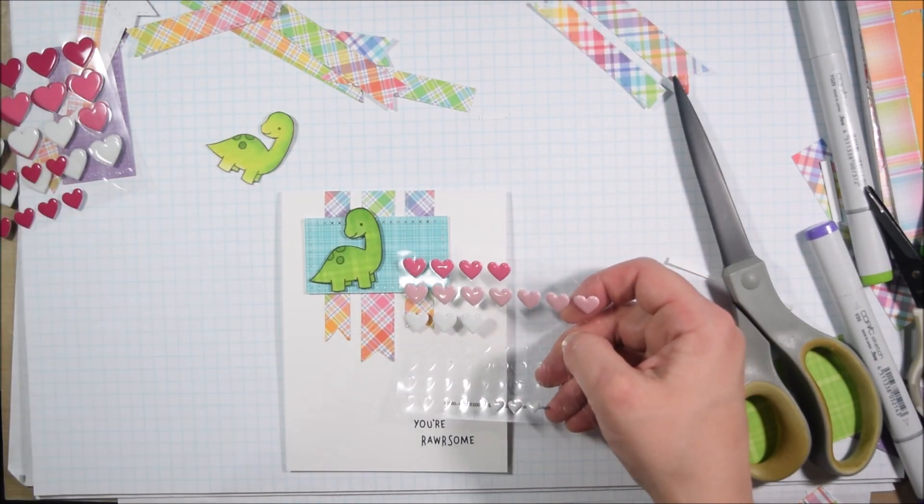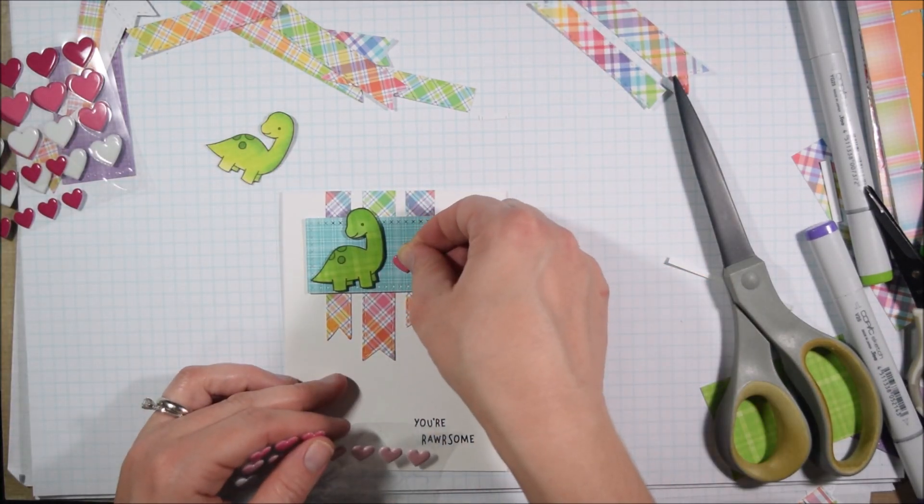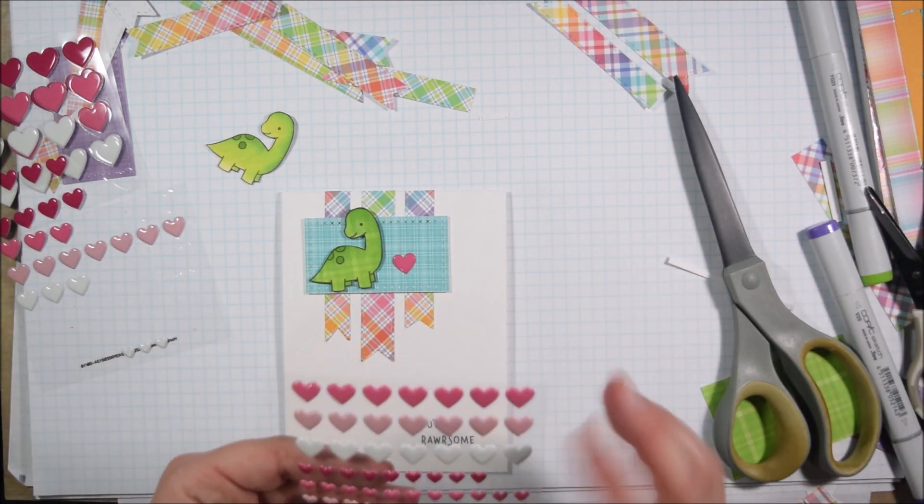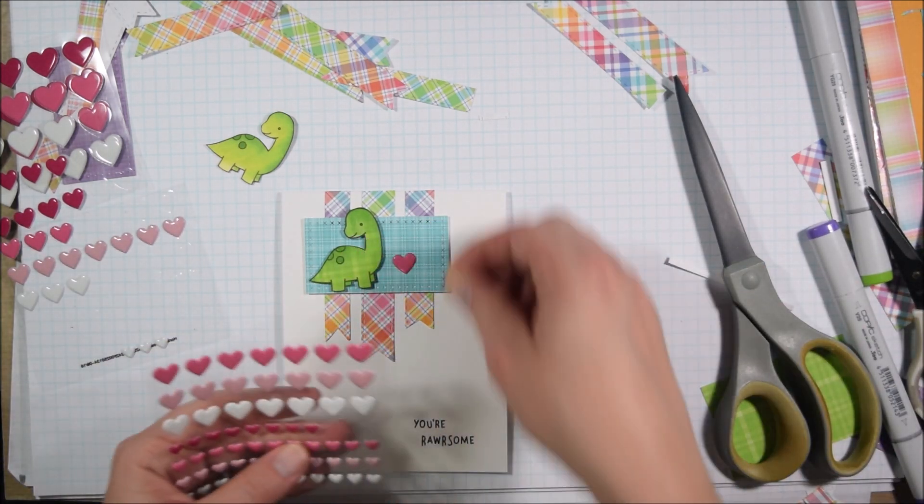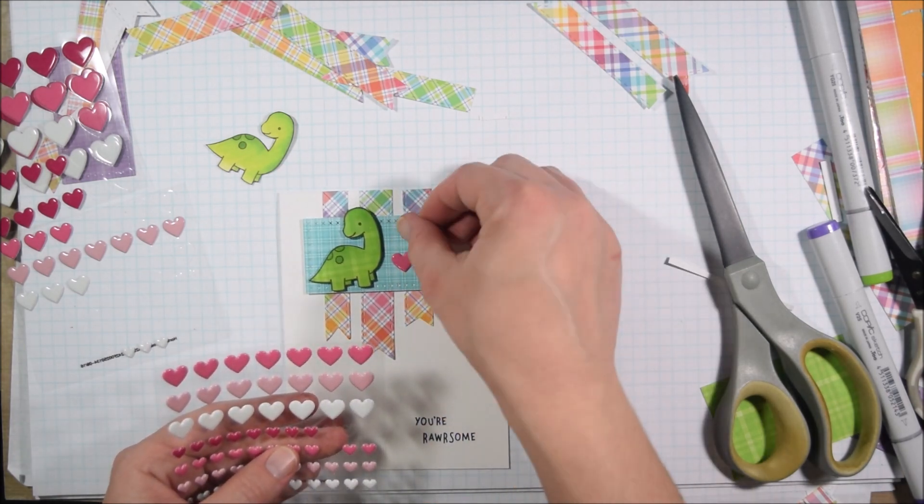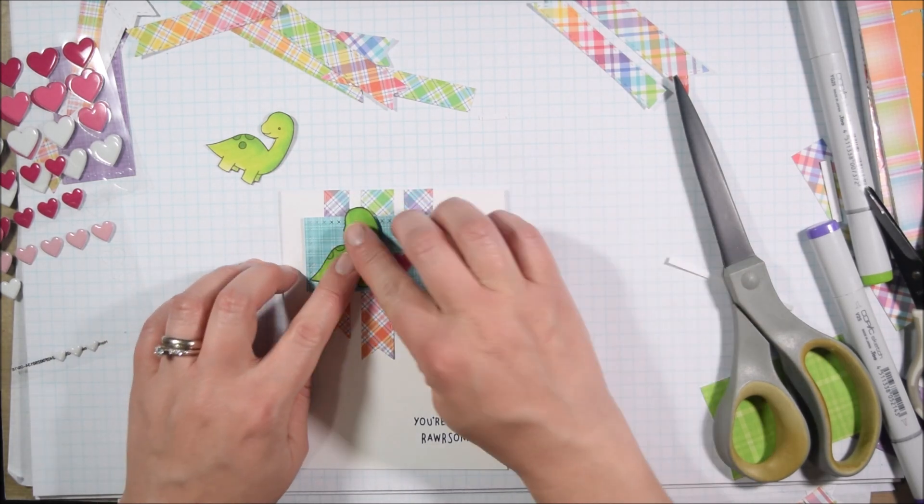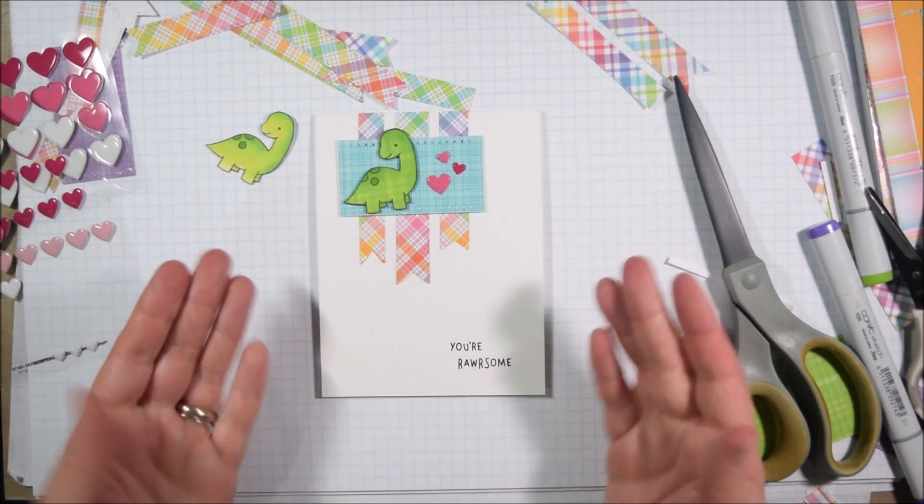Once I placed the dinosaur down, I felt like there was just a lot of space on either side if I centered him, so I wanted to add another little quick element. And in the idea behind the card was using scraps, well I thought I could also use my stash.